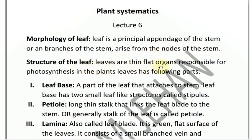Structure of leaf: The leaves are thin, flat organs responsible for photosynthesis. Mainly the leaf has three parts: leaf base, lamina, and petiole. Leaf base is a part of the leaf that attaches to stem. The leaf has a part that attaches to the stem.